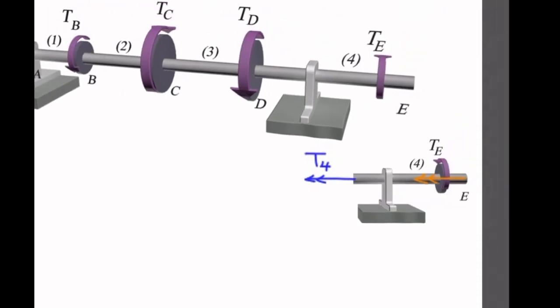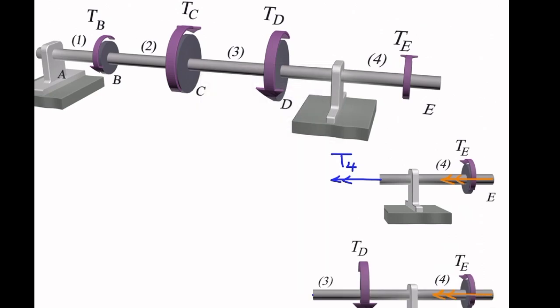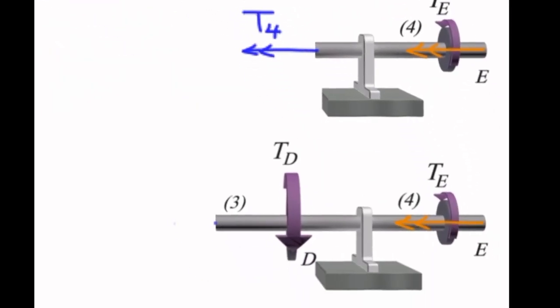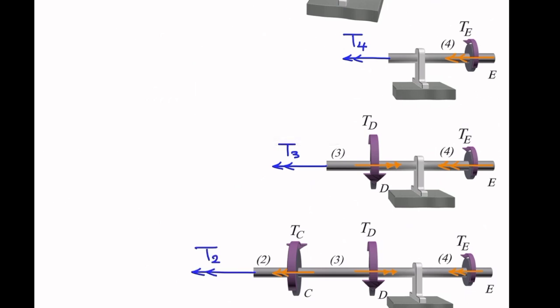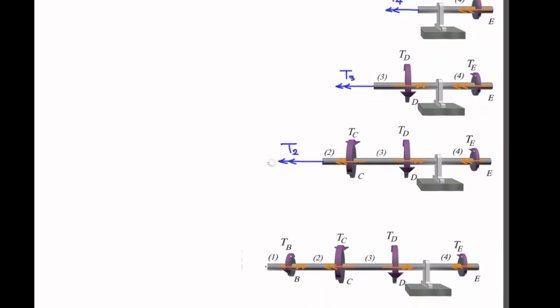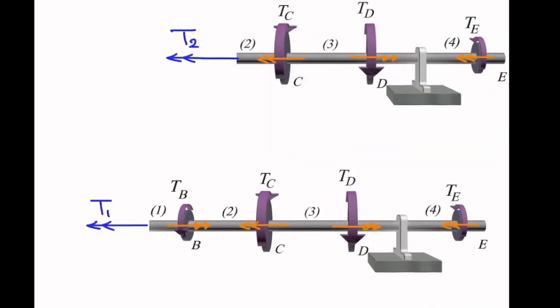Now let's look at segment 3. I need to cut it between C and D. For Td, the double arrow direction is now to the right. At the cut section, the unknown torque T3 goes outward from the surface, pointing to the left. Similarly, we do the free body for segment 2, putting the double arrows for external torques and the internal torque at the cut section. The last figure gives us the free body for segment 1. In total we have four free body diagrams, one for each shaft.